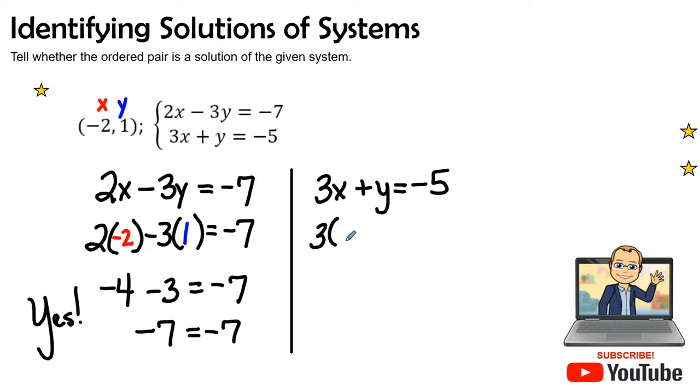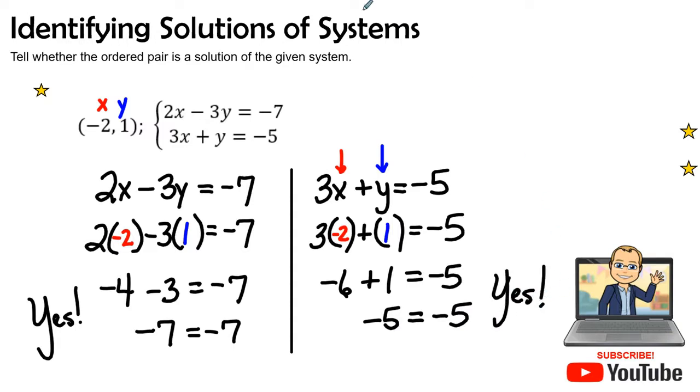The point (-2, 1) will fall on the line that is constructed by 2x - 3y = -7. Let's try the second equation, replacing once again the variables with parentheses. We have 3 times -2, which is -6, plus 1. Does that equal -6 plus 1, which is -5? Yes! So this falls on my line. Here's my line for my first equation, my line for the second equation, and this falls at the point of intersection where (-2, 1) will fall right there on both lines.